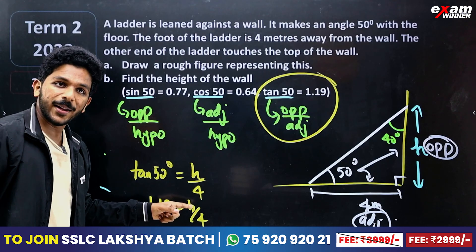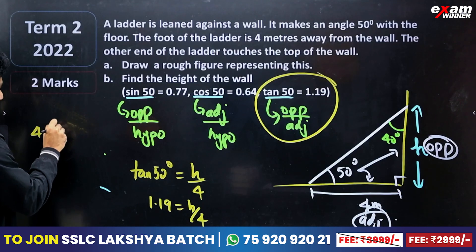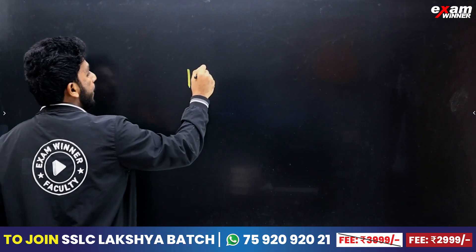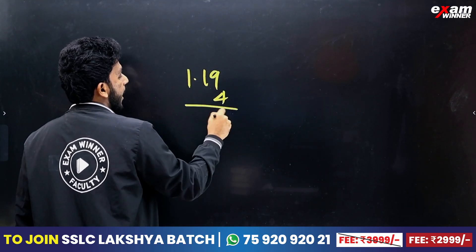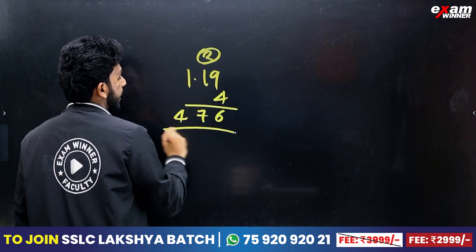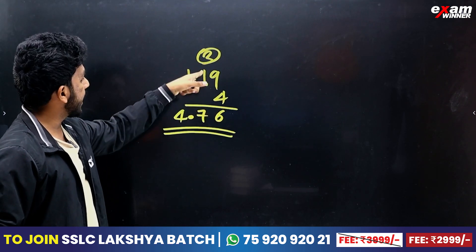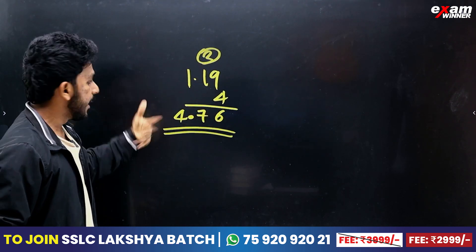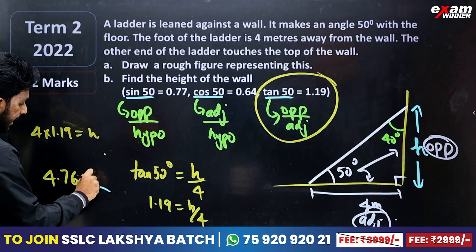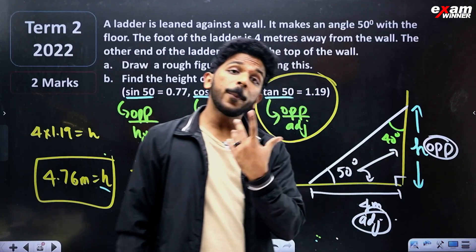If we change the h, then 4 which is division becomes multiplication. So 4 into 1.19 equals h. 4 into 1.19 is 4.76 meters. Then 4.76 meters is the height.